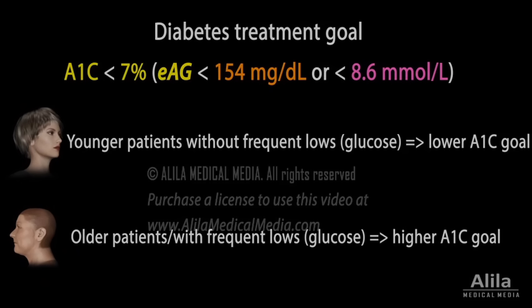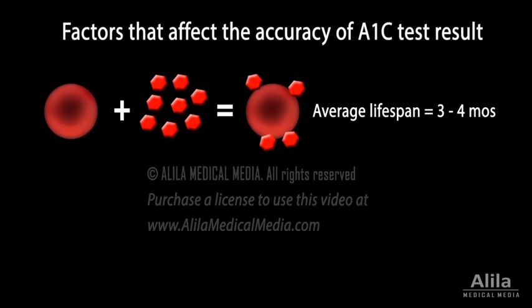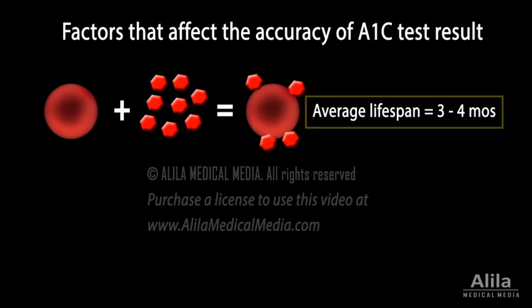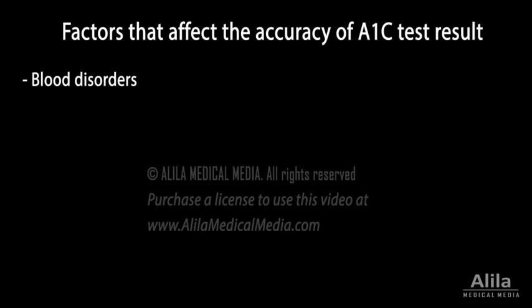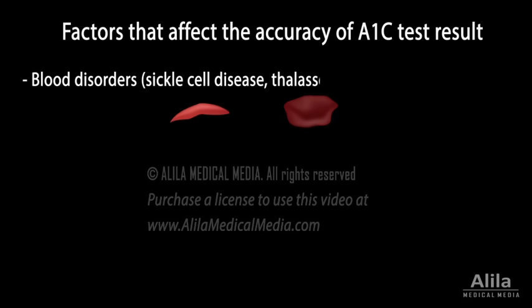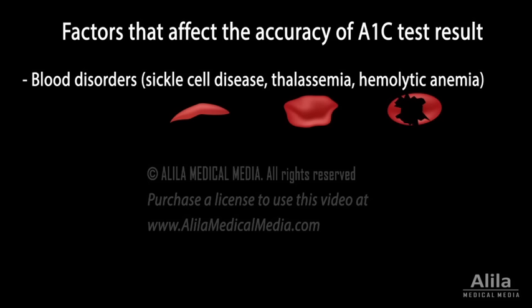It is important to note that several factors can affect the accuracy of A1c test results, in which case, unless corrections can be made, A1c cannot be used to assess blood glucose levels. For example, people with blood disorders such as sickle cell disease, thalassemia, or hemolytic anemia may have a lower than expected A1c because their red blood cells have a shorter lifespan.